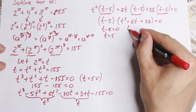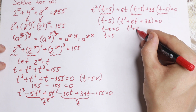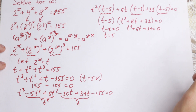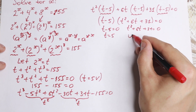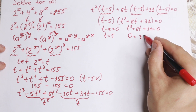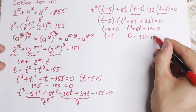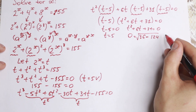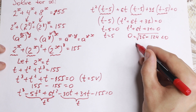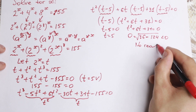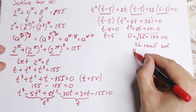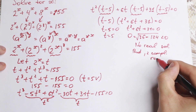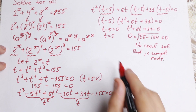Now for the second factor: t squared plus 6t plus 31 equals 0. We solve using the discriminant: b squared minus 4ac equals 36 minus 124, which is negative. So there are no real solutions from this factor — only two complex roots.